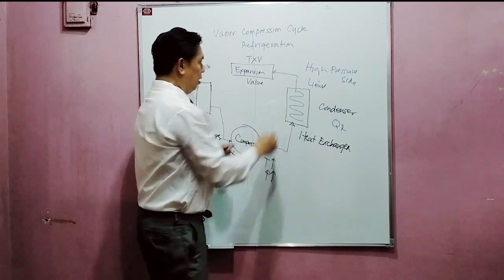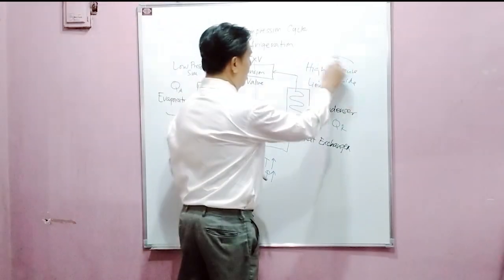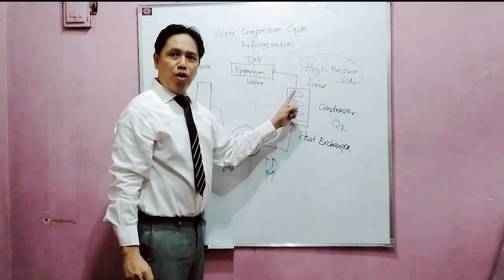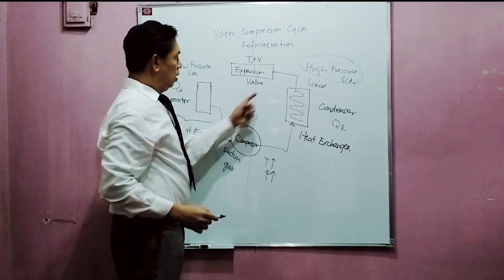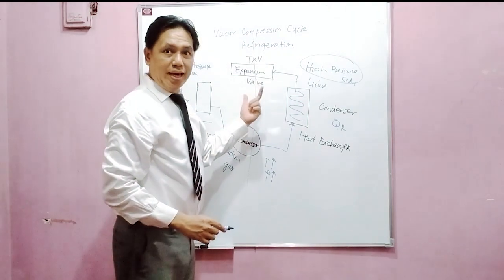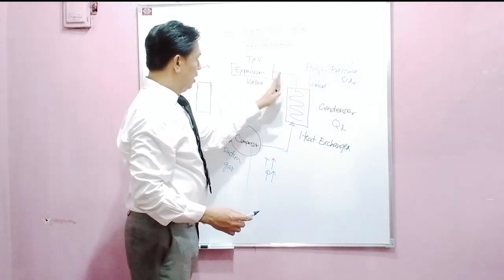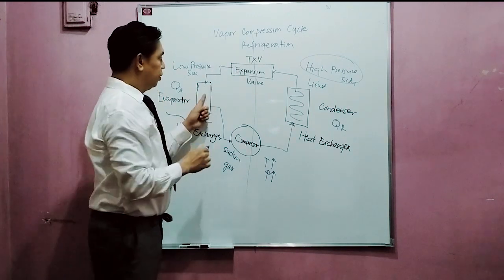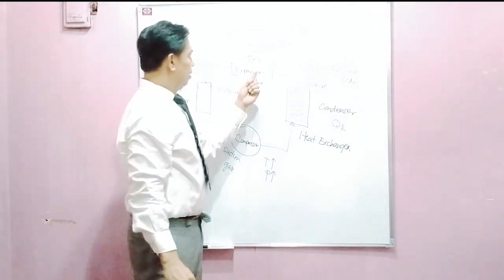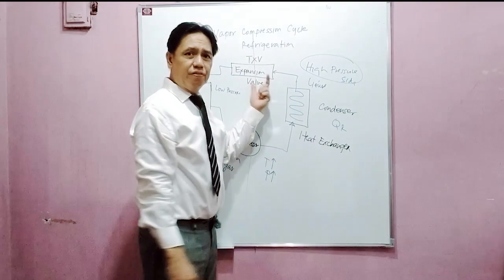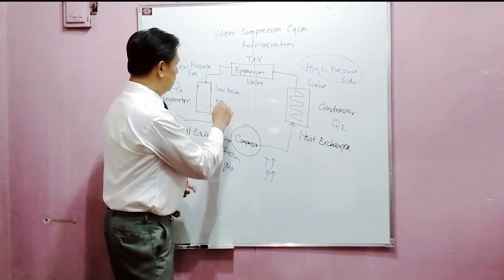Then it goes into the expansion valve. This side is still high pressure — the liquid form of refrigerant here is high pressure — so it goes into the expansion valve. The function of the expansion valve is to lower the pressure of the liquid refrigerant, so that when it goes to the evaporator it will have a low pressure. The thermal expansion valve has a series of orifices, so when the refrigerant passes through, it lowers the pressure and lowers the temperature.